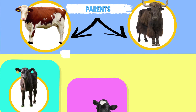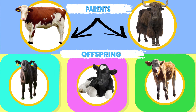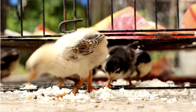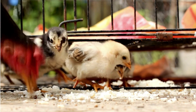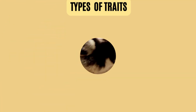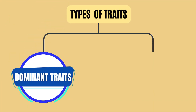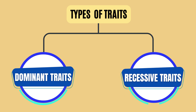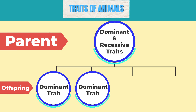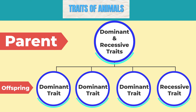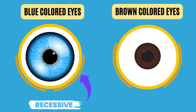But if we have the same parents, why is it that each offspring looks different? When the genetic materials of both parents combine, there is a chance of certain traits being expressed in the offspring. The traits which are expressed are called dominant traits, and the traits which are not expressed are called recessive traits. There is a one in four chance that an offspring expresses a recessive trait rather than a dominant one. For example, blue eye color is thought to be recessive compared to brown eye color.